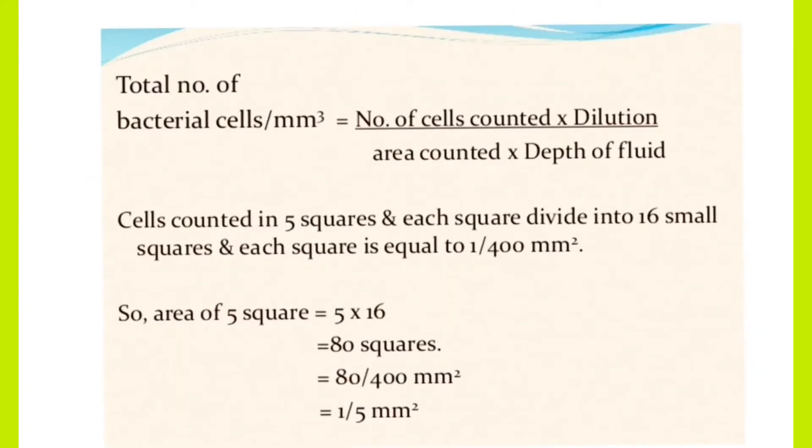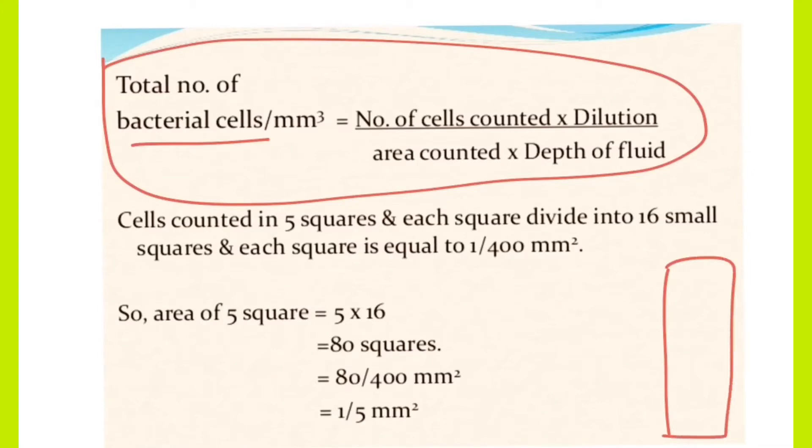Now we will see the number of bacterial cells to count for the formula. The formula is for the number of bacterial cells per millimeter square. We have a slide like structure, Neuber slide. There are five chambers. The number of cells counted, dilution and area counted depth. There are 16 parts across those parts.